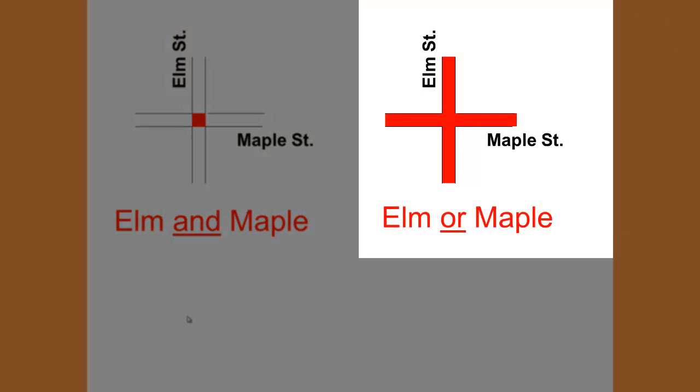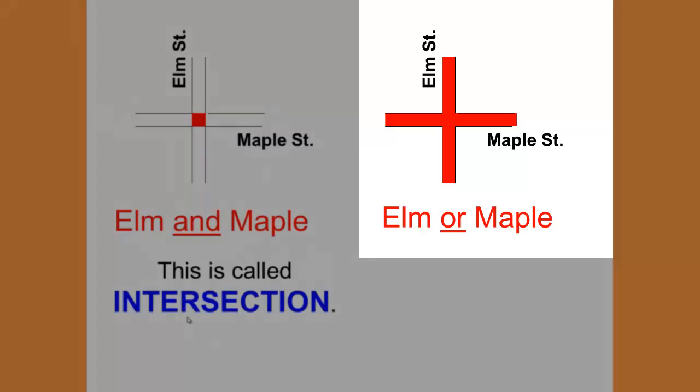Elm or Maple is here where all of both streets are shaded. Anywhere I stand on the shaded streets would be Elm or Maple. This will be called the union, like when you put north and south together.